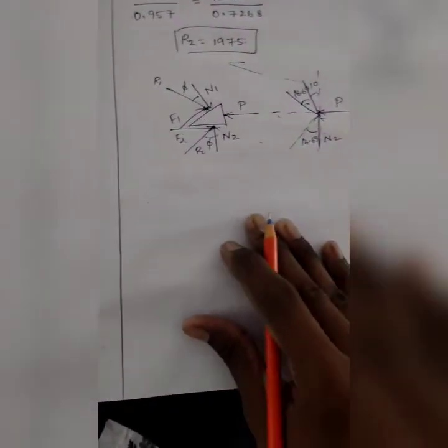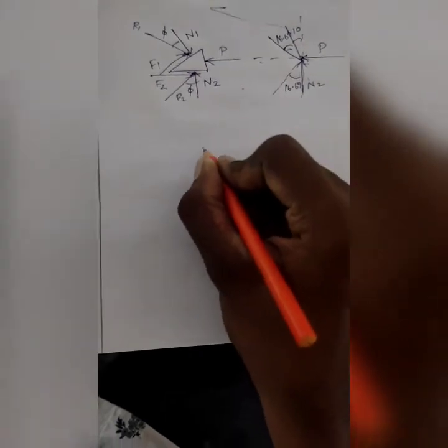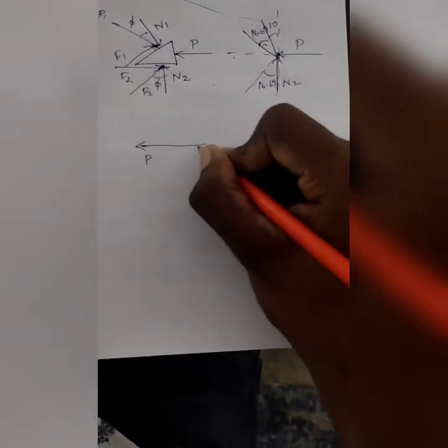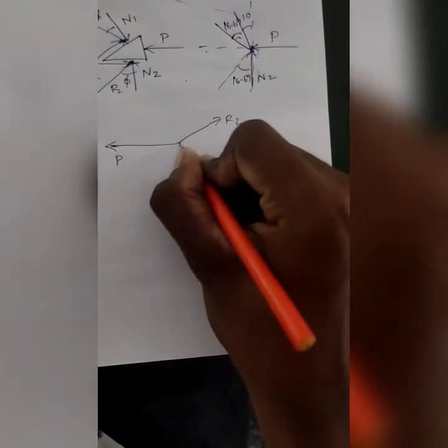Next, this is the Lami's free body diagram. We have P, R2, and R1.